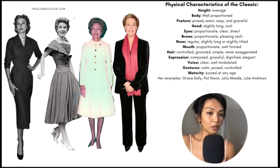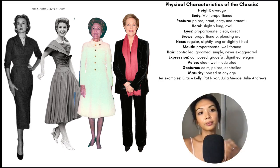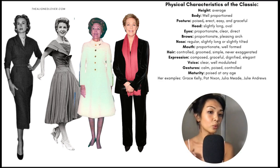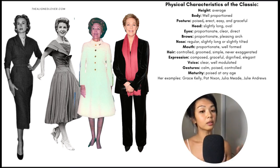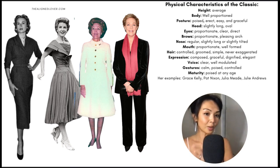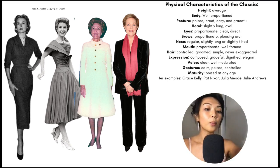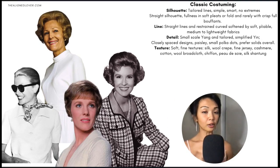An interesting thing McJimsy mentions in her book is that the Classic type tends to become more common with aging, because with aging comes the softening of extremes. If someone was really dramatic in youth, with age they gain a little bit more softness. Oppositely, if someone is very yin in youth, they gain a little more maturity and dignity with age. So this is a really great and accessible type for more mature women.